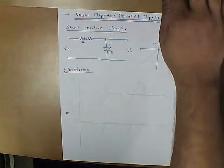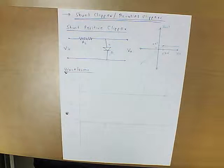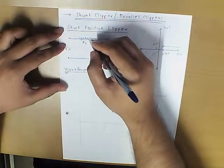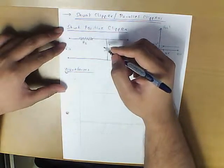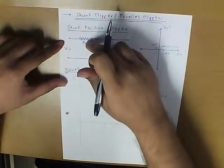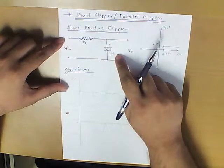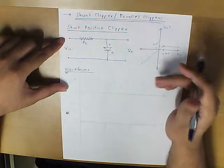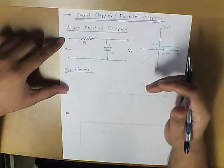Let us see the next class of clippers — shunt clippers. Shunt clippers are slightly different from series clippers in that the load resistance and the diode positions are interchanged. The voltage V-out is taken across the diode rather than the resistance. A shunt positive clipper clips everything above a particular level.